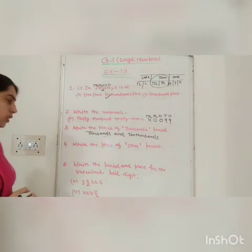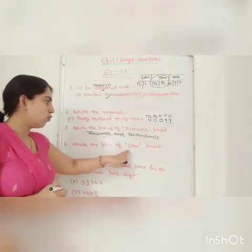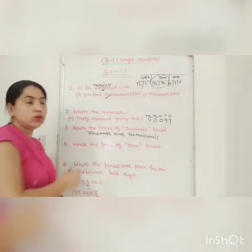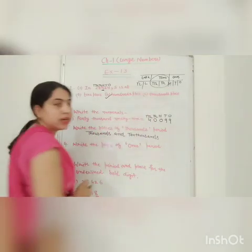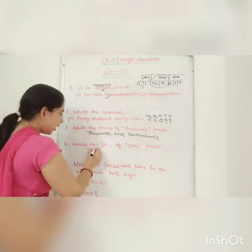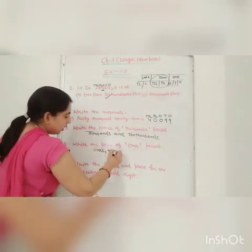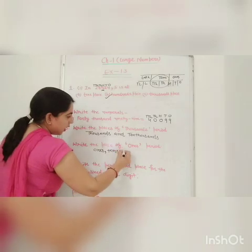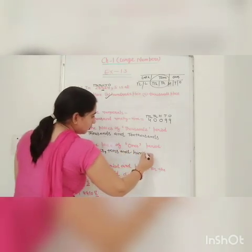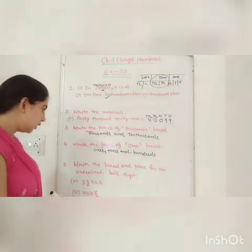These are the two places. Now write the places of the 1's period. You know in the 1's period there are 3 places: 1's, 10's, and 100's. These are the places.